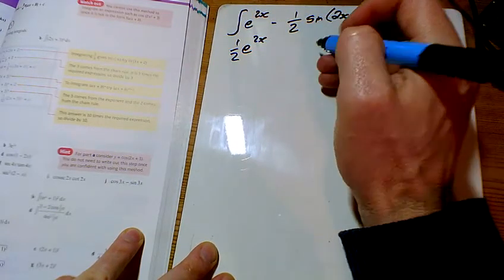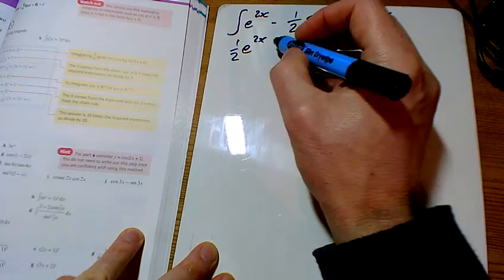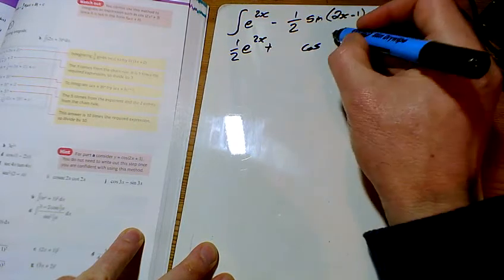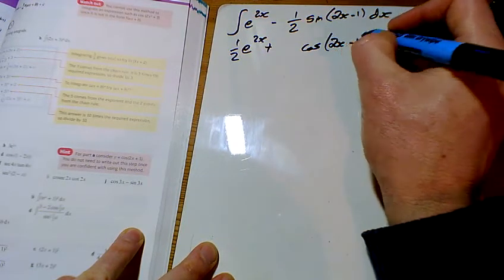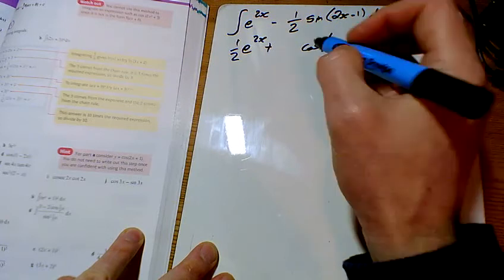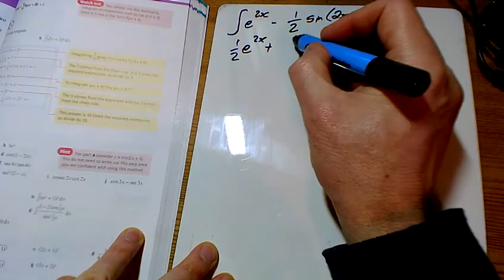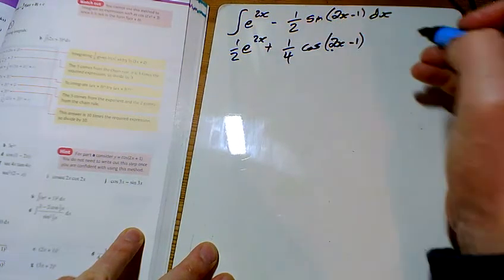The sine, sine goes to minus cos. I've already got a minus, so minus minus is plus. The 2x minus 1 will always stay the same. I'll divide by the number of x's as well. So I'll divide by 2. A half divided by 2 gives a quarter.